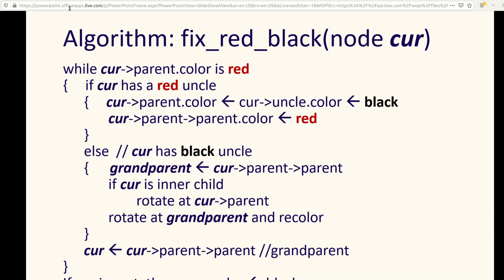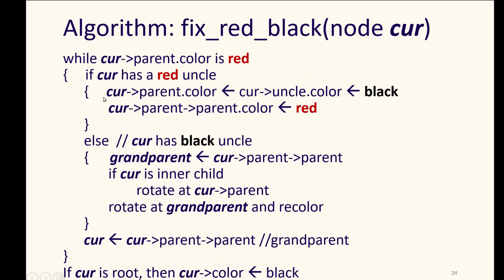And we'll keep looping until we reach the root, which point we can set the root to black. We've propagated the color violation all the way upward, and we know that we had to increase the black length or black height of the tree at the root there.